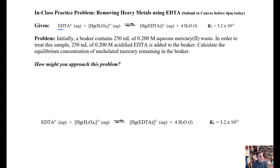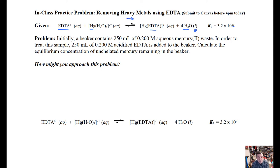We've got EDTA — you should remember from your handout what it looks like — and we've got nasty toxic mercury. In aqueous solution, mercury exists as a tetra-aqua complex, which you don't want. You can use EDTA to wrap it up, displacing the four aqua ligands to form a really nice EDTA complex, releasing free water. The K value is worth looking at: 10 to the 21st is really, really high, so for all intents and purposes this is a forward reaction.